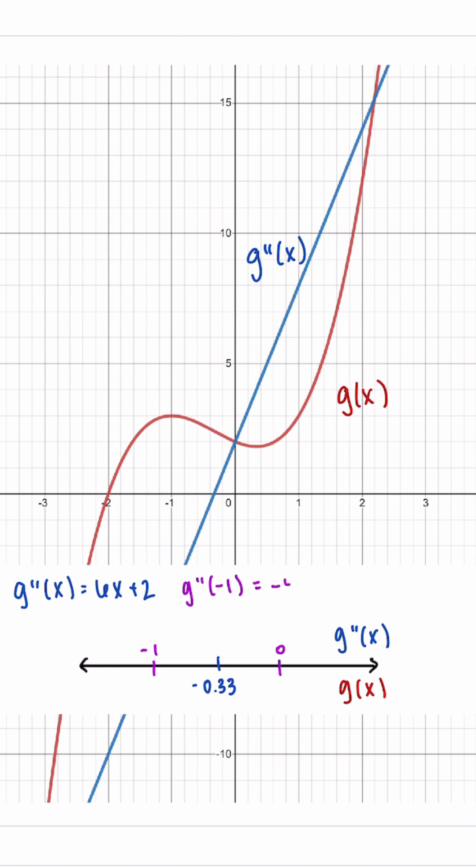We plug these into our second derivative because if they're positive or negative, that tells us if our function is concave up or down.